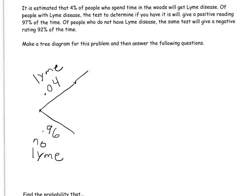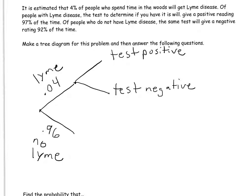Now the people that have Lyme disease — we're going to give them the test. Some people will test positive, meaning the test correctly says they're sick with Lyme disease. But some of those people might test negative — that would be a false negative, where the person has Lyme disease but the test says they're healthy. The problem tells us that if the person has Lyme disease, the test will be correct 97% of the time, and 3% of the time we get that false negative. Notice the probabilities along the branches add up to 1.